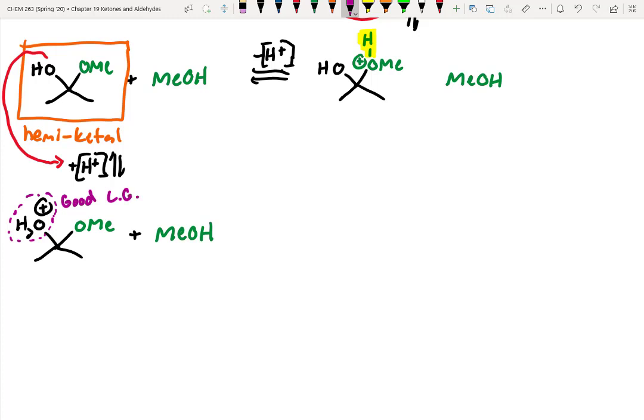Alright, so we've got this good leaving group. And we also have lone pairs that we haven't drawn in, but are assumed on that oxygen. So what we can do next is we can just eject off that leaving group before anything else happens. So now, we've got this intermediate. We've kicked off water. Water was our good leaving group that just got kicked off. And we still have methanol floating around.